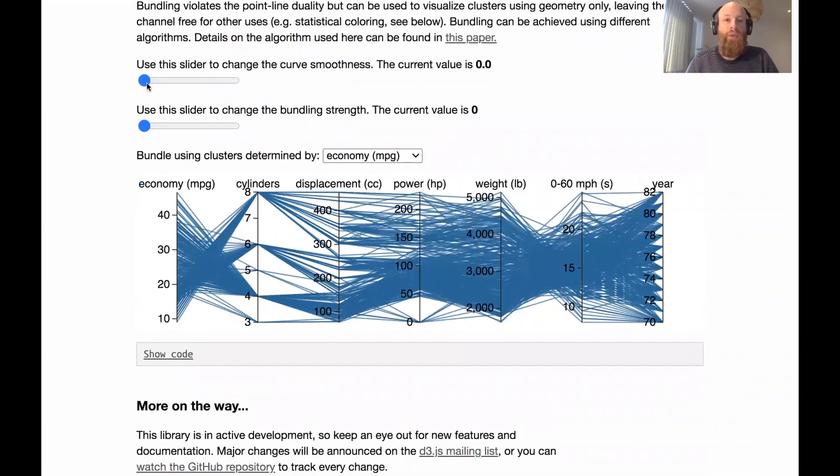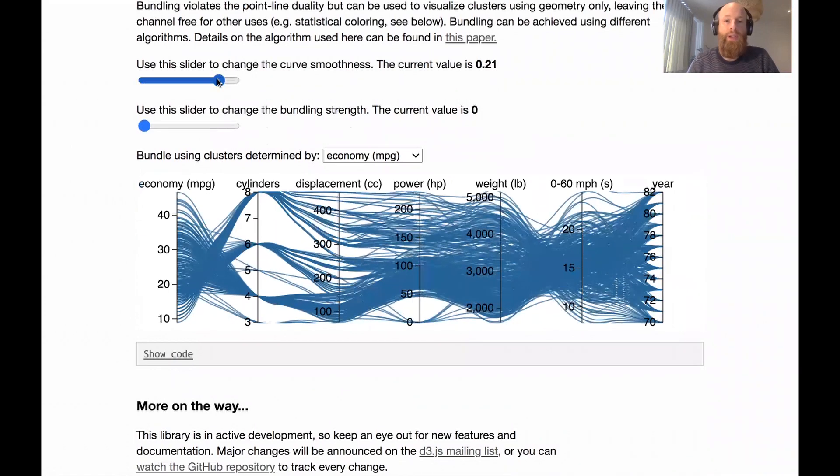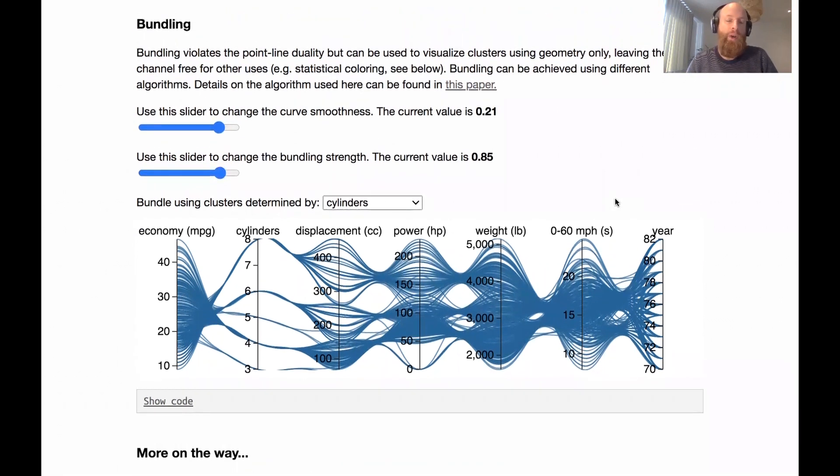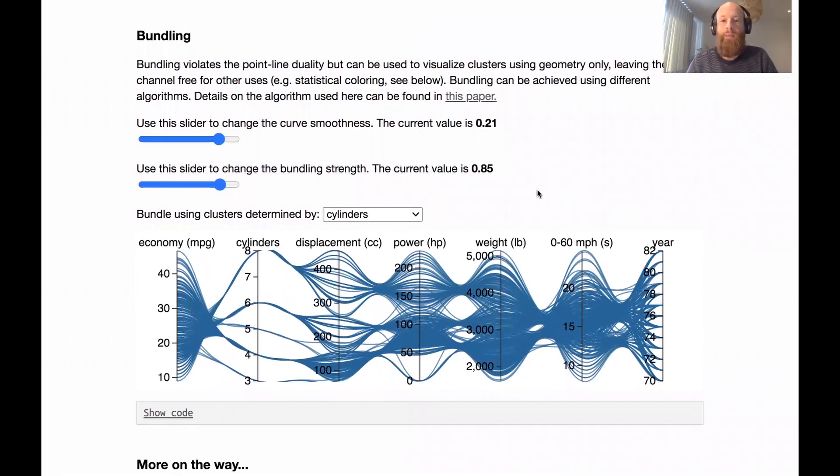And then finally, he also dives into the design variation of using curves and he adds to that a bundling technique. And let me show you how that works. And so if I slide the bundle strength to the right, you can see that the lines will be grouped together in between each pair of axes and here the bundling is done based on the number of cylinders. So within each pair of axes, the lines for the cars with the same number of cylinders kind of get attracted to each other. And this is a way of assessing the correlation between the cylinders dimension and all the other dimensions. So you can get quite creative with the use or when designing parallel coordinate plots and the bundling is one of the techniques that you can play with.